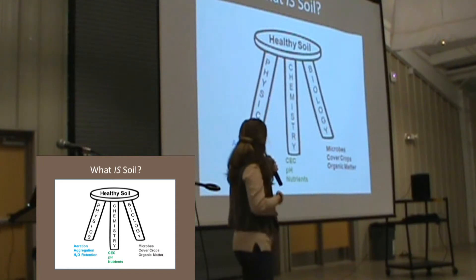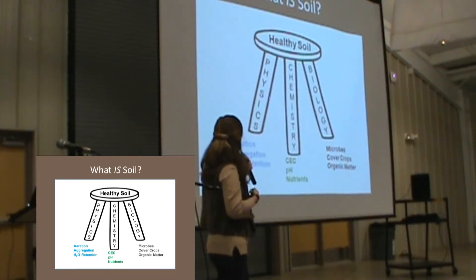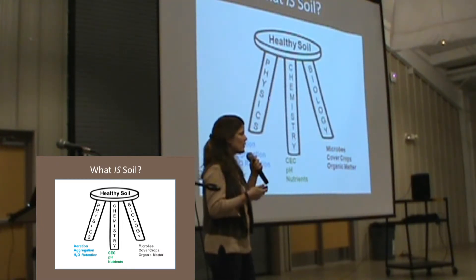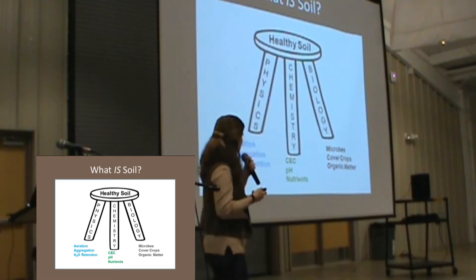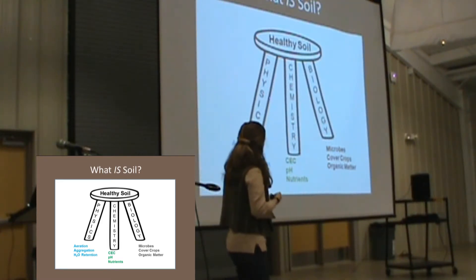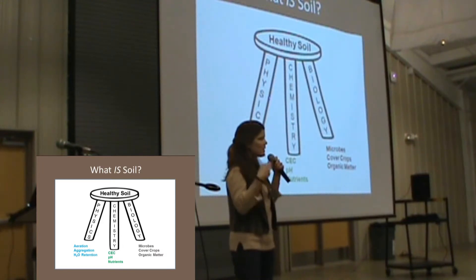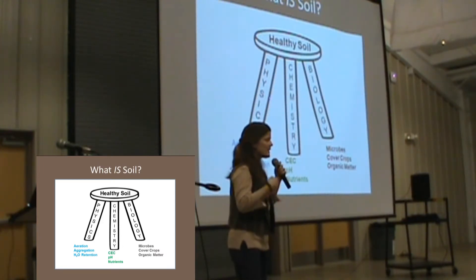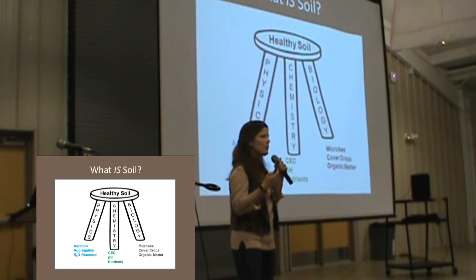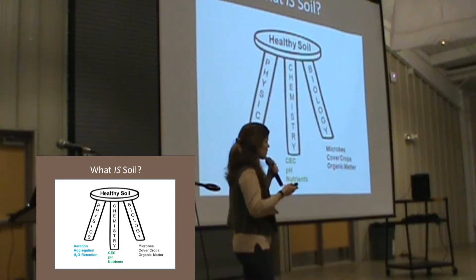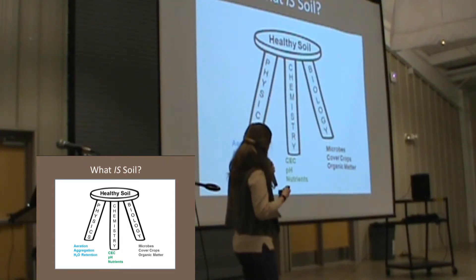With physics, we're talking primarily about aeration, aggregation of soil particles, water retention, and drainage — so how well does your soil handle water? With chemistry, we're talking about cation exchange capacity. We won't get too in-depth on that, but it's about how well your soil makes nutrients available to plants. pH is also part of chemistry — it's all about nutrients.